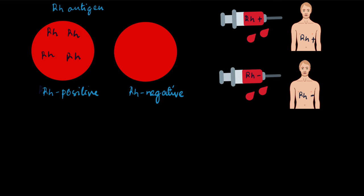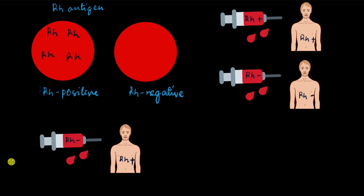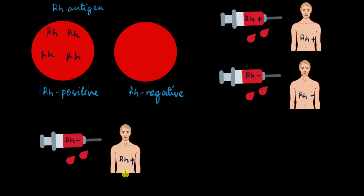What if RH negative blood is donated to an RH positive person? RH negative blood doesn't have the RH antigen on the RBC surfaces, but the RH positive recipient does. However, there is no incompatibility here because there are no foreign antigens in the donated blood. The recipient will not produce any antibodies, so they are safe.